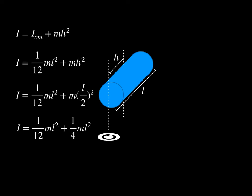Squaring the L/2, I get 1/12 mL² plus 1/4 mL², which reduces to 1/3 mL². This is the moment of inertia for a thin rod rotated about its end. All of this was because I applied the parallel axis theorem, which is defined here.